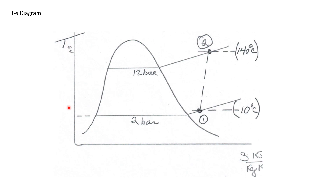Finally, we'll draw a temperature-entropy diagram. We have our vapor dome, and state 1 is a superheated vapor at 2 bar, so here's our 2 bar constant pressure line. Out in the superheated region, state 1 is at minus 10 degrees C. State 2 is at a higher pressure of 12 bar, sitting on the 12 bar constant pressure line at a temperature of 140 degrees C. State 2 has a higher specific entropy than state 1, so this process goes up and to the right on the diagram.